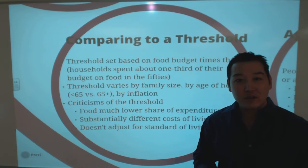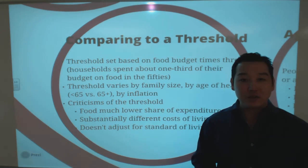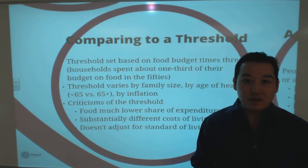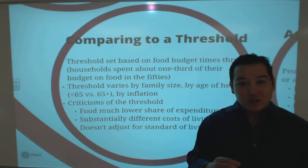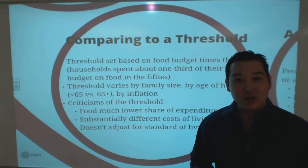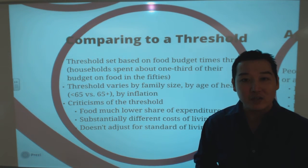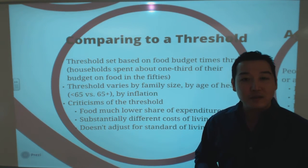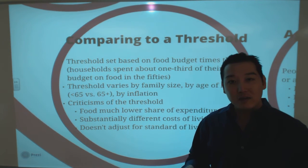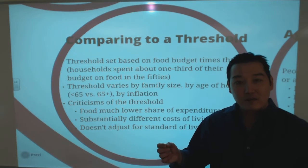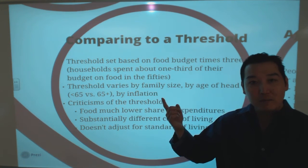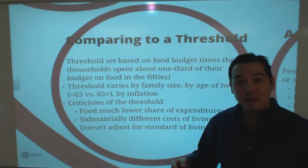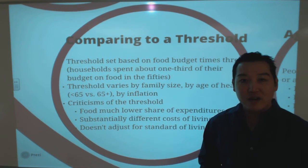The Census Bureau uses the Molly Orshansky threshold from the 1960s — the low-cost food budget multiplied by three, adjusted for changes in prices over time using the consumer price index. The threshold differs for families of different sizes, ranging from one person to nine or more people.